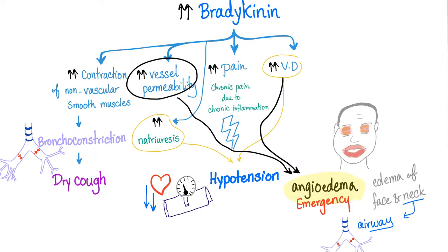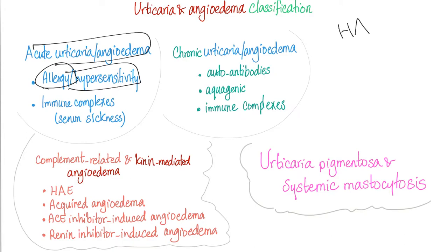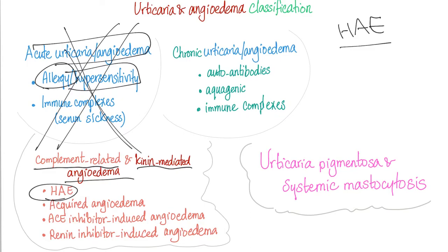Here is a great slide for bradykinin effects: bronchoconstriction, hypotension, and angioedema — see the swelling of the lips, swelling of the eyelids, and laryngeal edema. Regarding urticaria and angioedema classification, we have many different subtypes. There is the allergic or hypersensitivity type of angioedema, but hereditary angioedema is complement-related and kinin-mediated angioedema. It's not allergic; it's not a hypersensitivity reaction.